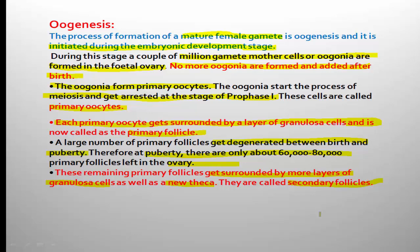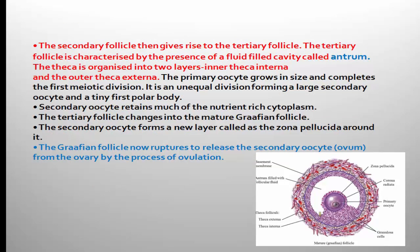To summarize the key terms: oogonium gives rise to the primary oocyte (arrested at prophase I); when surrounded by granulosa cells it becomes the primary follicle; when surrounded by more granulosa layers plus theca it is the secondary follicle. The secondary follicle then gives rise to the tertiary follicle, characterized by the presence of a fluid-filled cavity called the antrum.